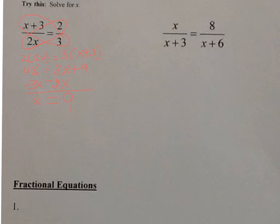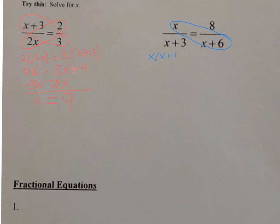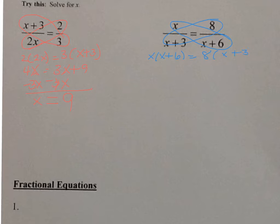Let's take a look at the one on the right. Same thing, we're going to cross multiply here. So I'm going to have x times x plus 6 equals - cross multiply the other way - 8 times x plus 3.